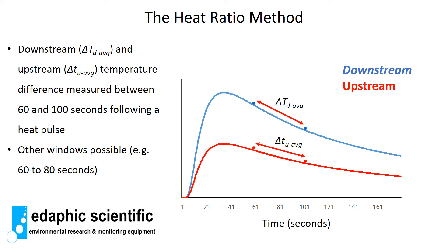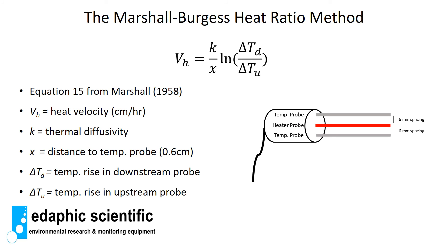In theory, only one measurement point at 60 seconds is needed, but in practice we take more than one measurement because sensors and data loggers have some electronic noise. An average of several readings minimizes this noise. Some papers take an average between 60 and 100 seconds, then take the ratio of downstream to upstream temperature over those readings. Other windows are possible — for example 60 to 80 seconds or 70 to 90 seconds — but it's always good practice to average more than one temperature reading.